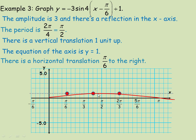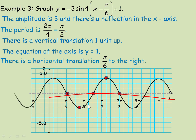Counting the grid blocks confirms the maximum is 3 above and the minimum is 3 below the axis. We draw our sinusoidal curve through those key points and continue it to draw a few more cycles. That's three full cycles of y equals negative 3 sine of 4x minus pi over 6 plus 1.